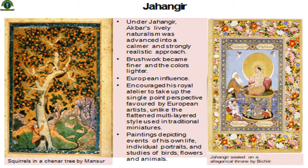Under Jahangir, Akbar's lively naturalism was advanced into a calmer and strongly realistic approach. Brushwork became finer and the colors lighter. European influence encouraged his royal atelier to take up single-point perspective favored by European artists, unlike the flattened, multi-layered style used in traditional miniatures. Paintings depicted events of his own life, individual portraits, and studies of birds, flowers, and animals.